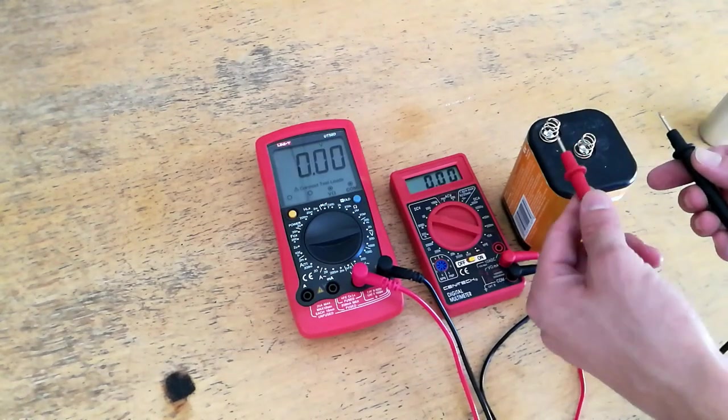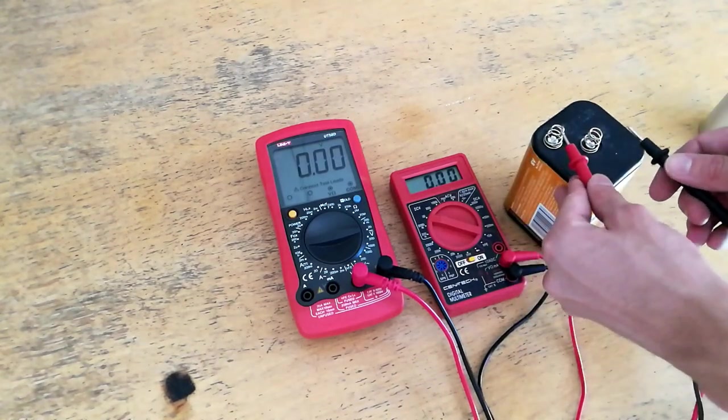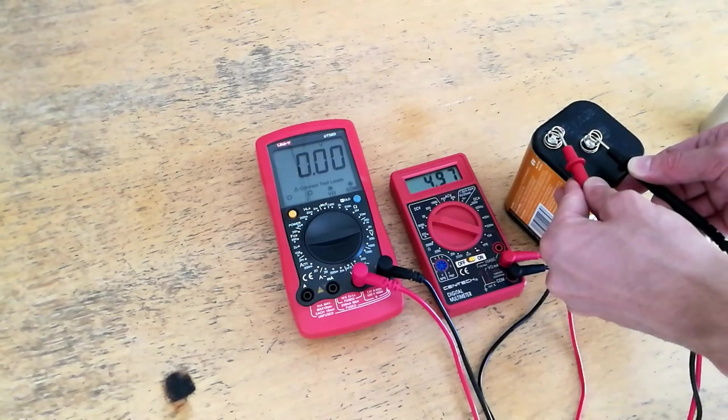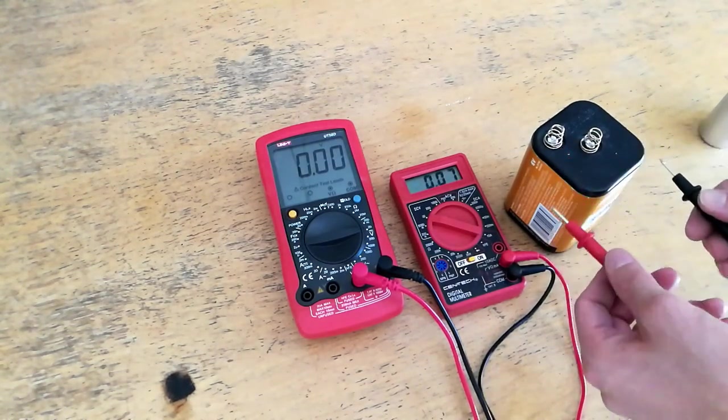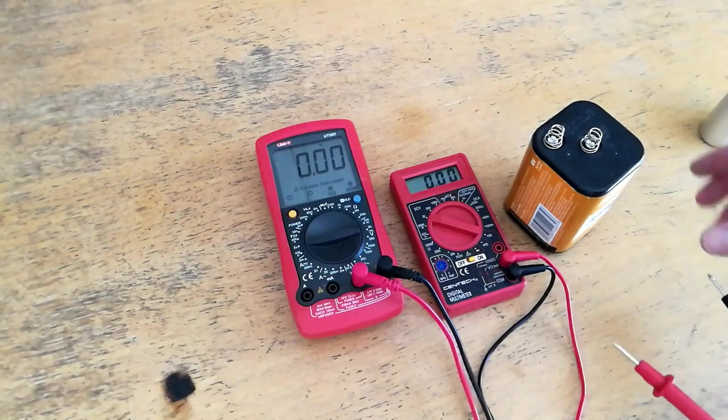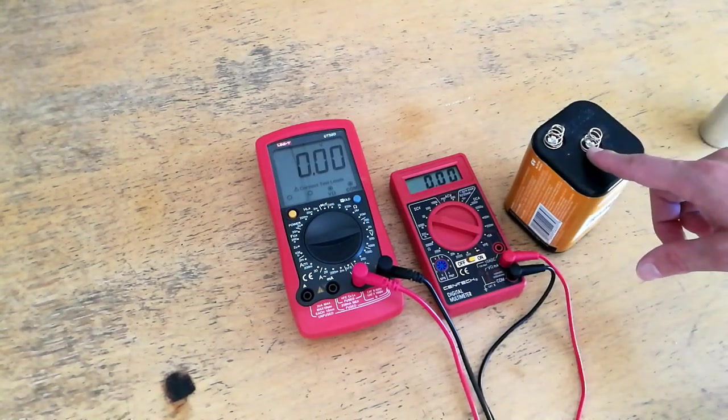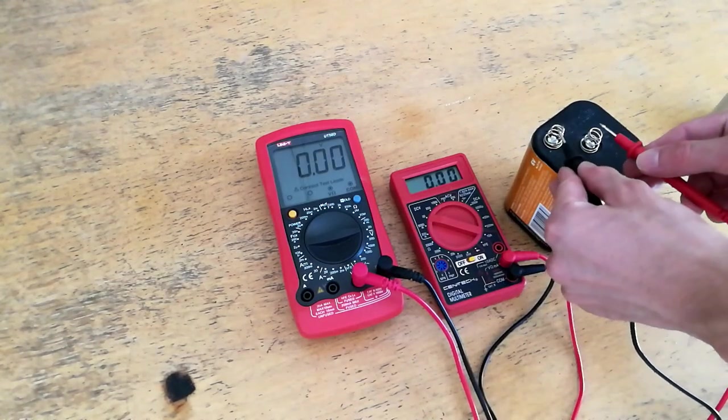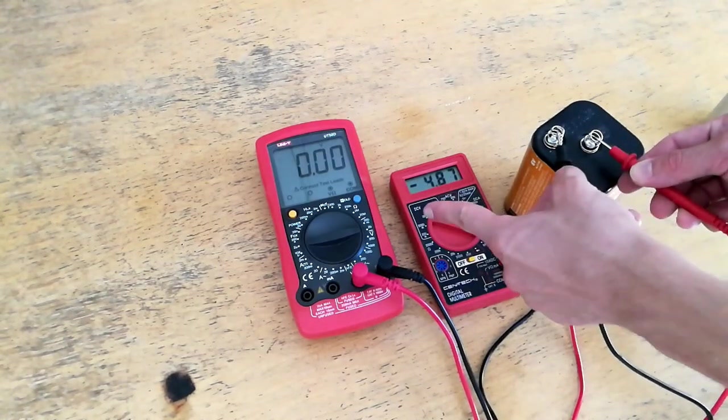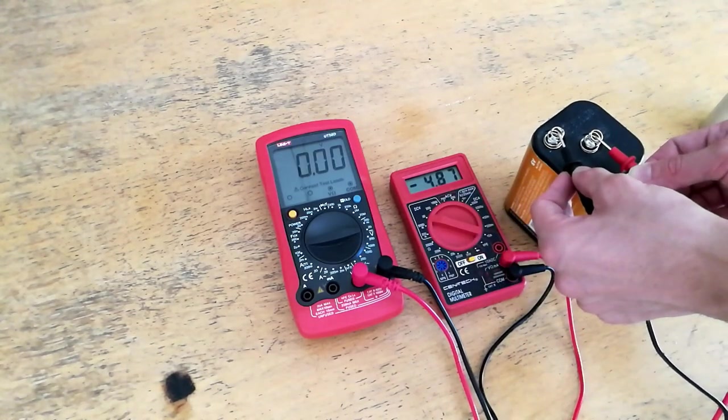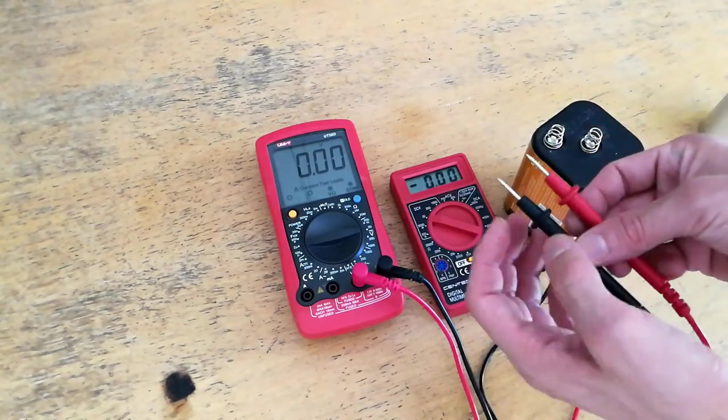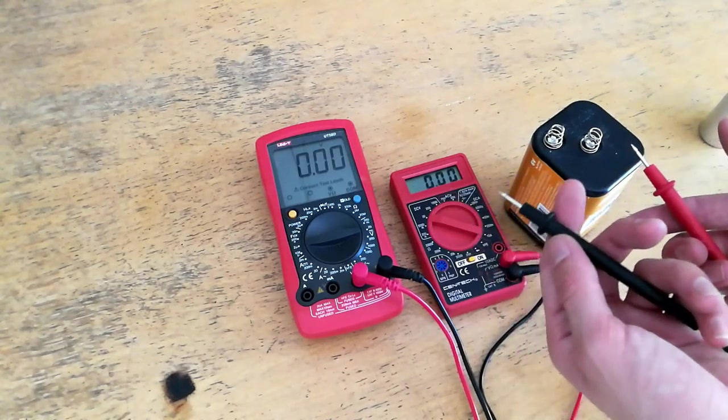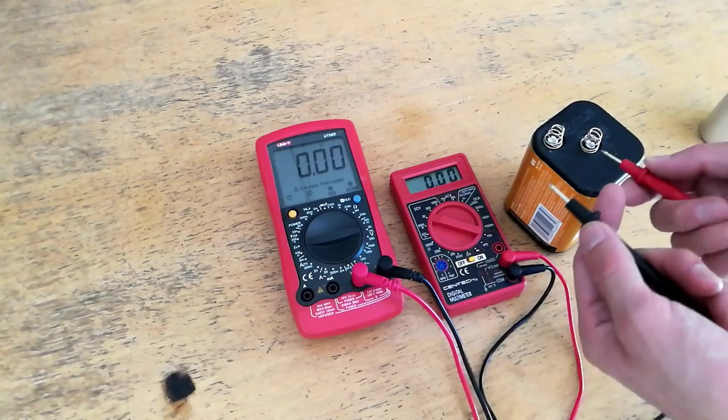By setting this dial to 20 volts DC—you always want to set it to the range higher than what you're going to measure—we can measure the nominal value of this battery. So what you want to do is put the red to the positive and the black to the negative, and you'll see this battery is quite heavily discharged. It's just under five volts. Now one thing you can do if you're curious as to what the polarity of an unknown DC voltage source is, you can flip these around and try the other way.